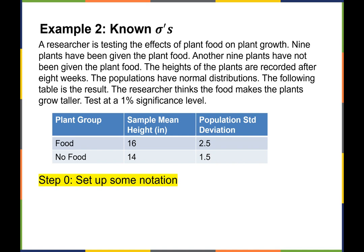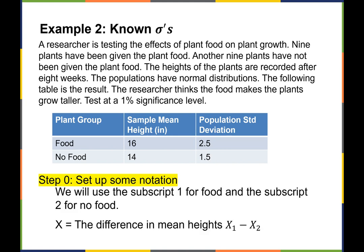Example 2: let's do one with known population standard deviations. A researcher is testing the effect of plant food on plant growth. Nine plants have been given the plant food and another nine have not. Heights are recorded after eight weeks. Both populations have normal distributions. The researcher thinks the food makes the plant grow taller, and we're testing this at a 1% significance level. We use subscript 1 for the food group and subscript 2 for the no-food group. The random variable is the difference in mean heights, X1 minus X2.